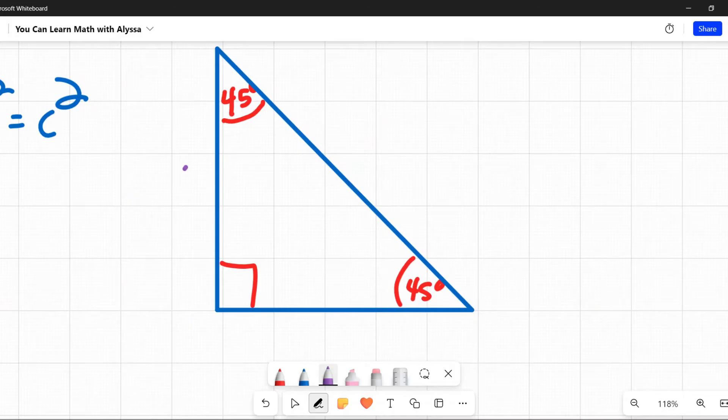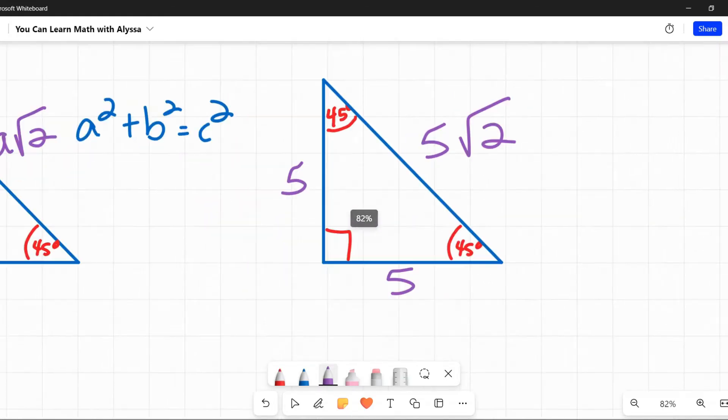For example, if this side was 5 centimeters, then this side would also be 5 centimeters, and this side would be 5√2. You will need to memorize this.